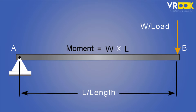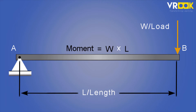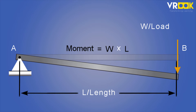The difference between the force and the moment is that the force acts at a point on the beam horizontally or vertically, but the moment acts about a point. It will try to rotate that point clockwise or anti-clockwise.